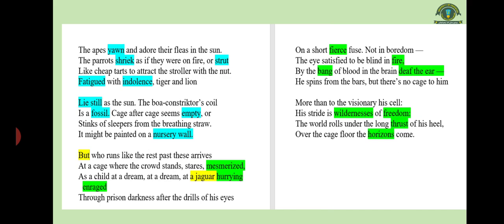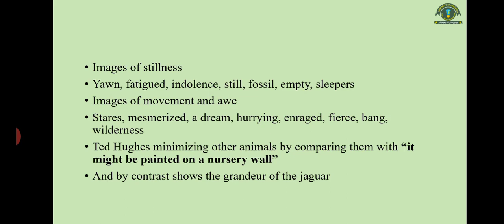Looking at the imagery of the poem, words highlighted in the first two stanzas — yawn, shriek, strut, fatigued, indolence, lie still, fossil, empty, nursery wall — all represent stillness and calm. The word 'But' signals the contrast of the third stanza dealing with the jaguar. Words associated with jaguar — mesmerized, hurrying, enraged, fears, fire, bang, death, wilderness, freedom, thrust, horizons — are completely in contrast with the words of the first two stanzas.